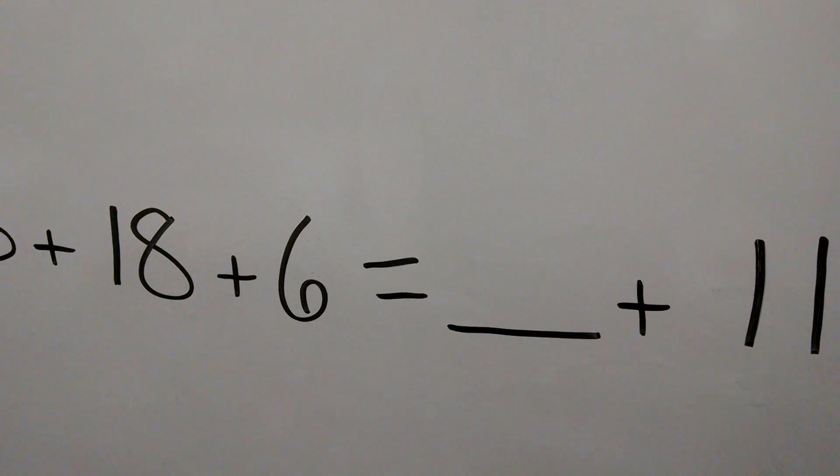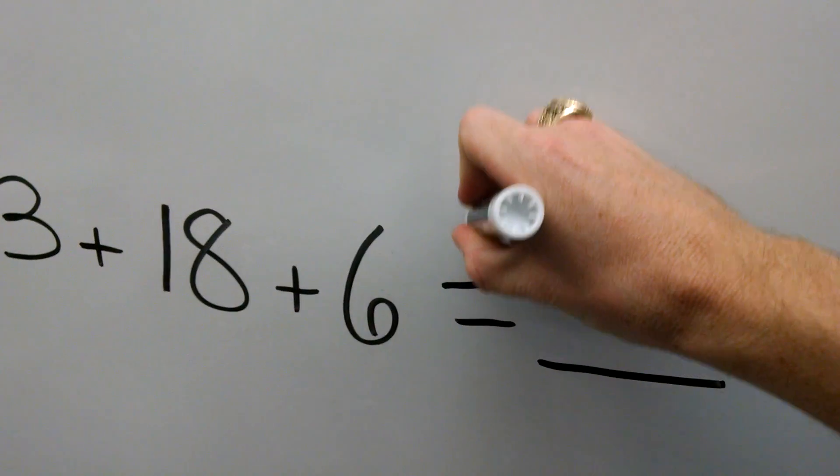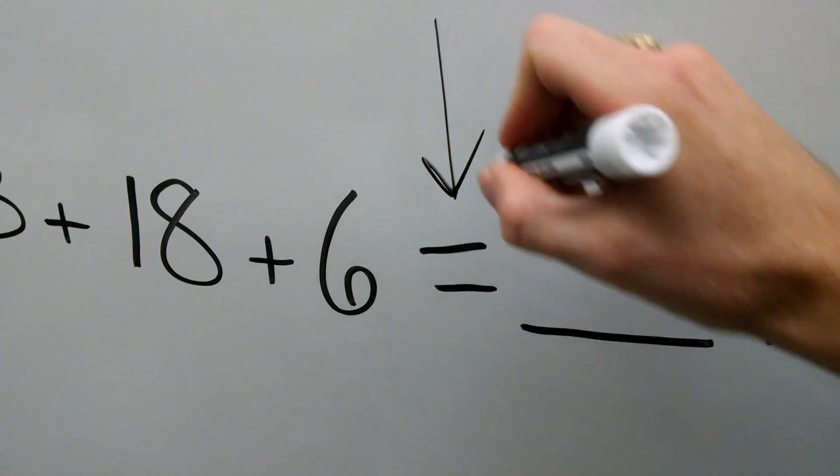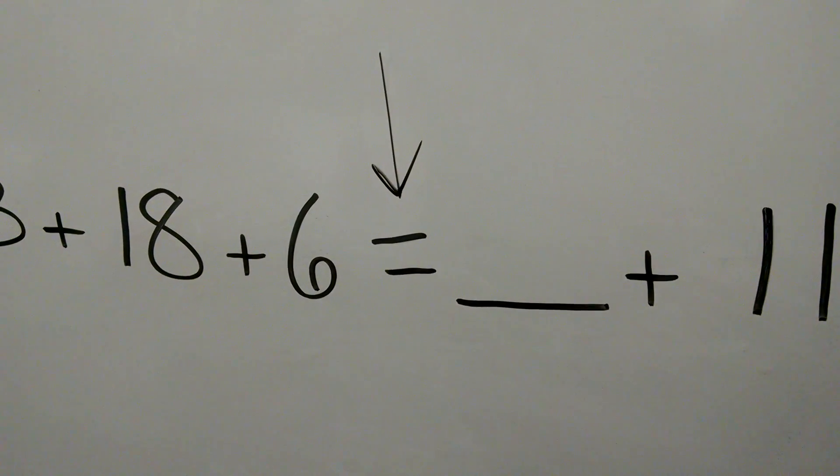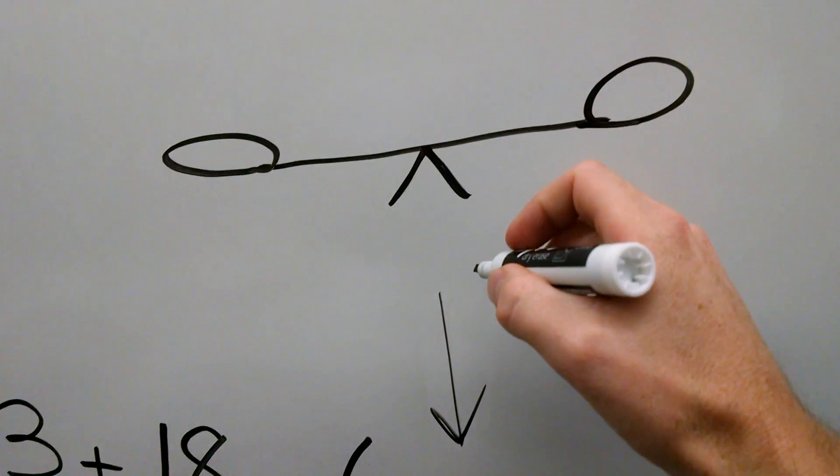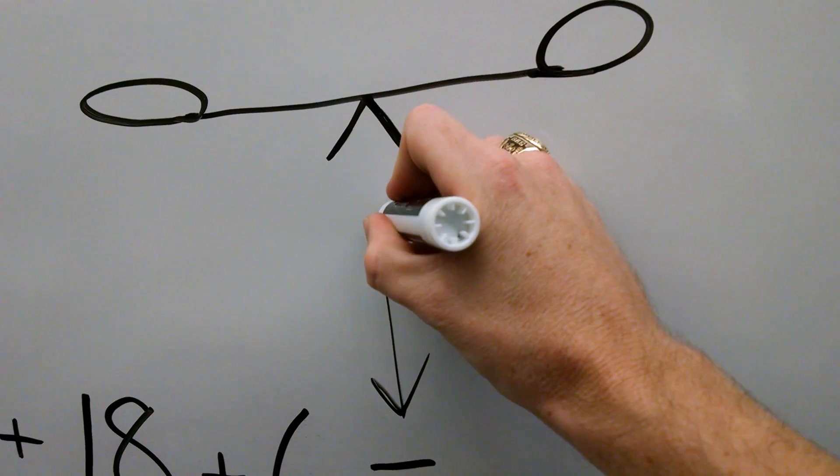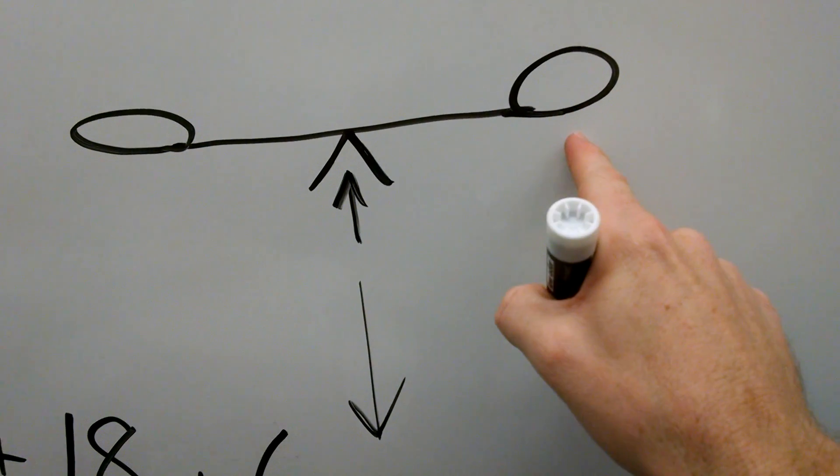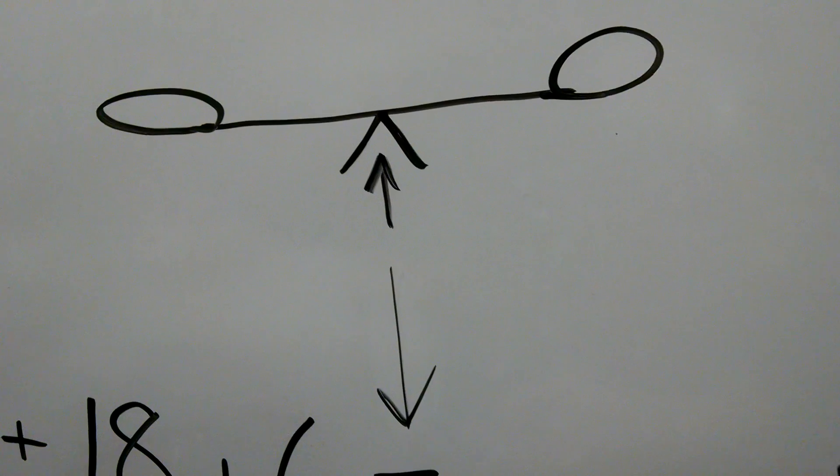Hey guys, we're going to balance both sides of the equation. That means we're going to focus right in on that equal sign. That equal sign is just like the middle of a balance. We want whatever's on one side to equal the same amount so they balance out.